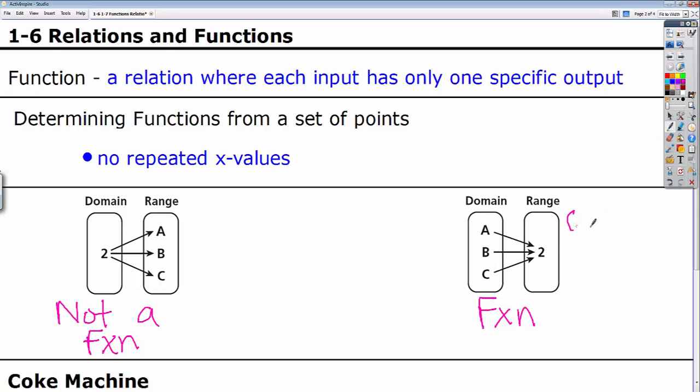The way you can tell from a set of points is no repeated X values. So if I were to write these points out over here, that's A, 2, B, 2, and C, 2. See how none of the X's repeat? A, B, C. But over here, this would be 2A, 2B, and 2C. See how those X values all repeat? That's how you can tell right there. 2, 2, 2. That is not a function.